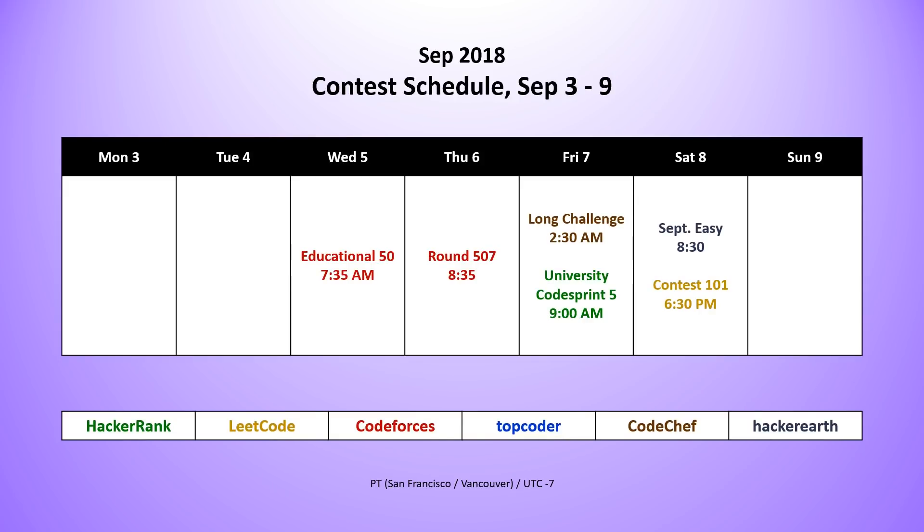Taking a look at the contests happening next week, we have six contests. A lot busier than the previous week. On Wednesday and Thursday, we have two contests from CodeForces, Educational 50 on Wednesday and Round 507 on Thursday. On Friday, we have from CodeChef, the start of our week-long plus long challenge. And we also have the start of our two day university code sprint from HackerRank. I typically don't include these in the schedule, but it's been so long since we've had a contest from HackerRank that's been rated that I decided to include an unrated one. So this won't affect your ranking, but you can compete in it if you'd like to. On Saturday, we've got from HackerEarth, the September Easy contest. And of course we have from LeetCode, the weekly LeetCode contest, Contest 101.